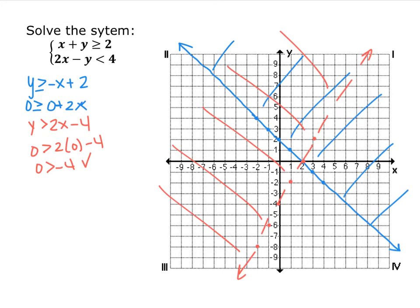So I graphed the first inequality, y is greater than or equal to negative x plus 2, so y intercept of 2 and a slope of negative 1. It has an or equal to, so it's a solid line. And then I plugged in 0, 0, 0 is not greater than or equal to 2, so I shaded away from 0, away from the origin.